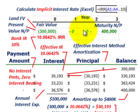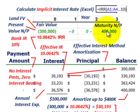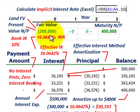Using Excel's IRR function with the cash flows of $300,000 received and $400,000 paid at the end of year three, we get an implicit interest rate of 10.0642%. This is consistent with the company's 10% borrowing rate, confirming it was a reasonable choice. In accounting, the interest rate used must approximate what you'd pay to the bank or reflect the fair market value of the note.